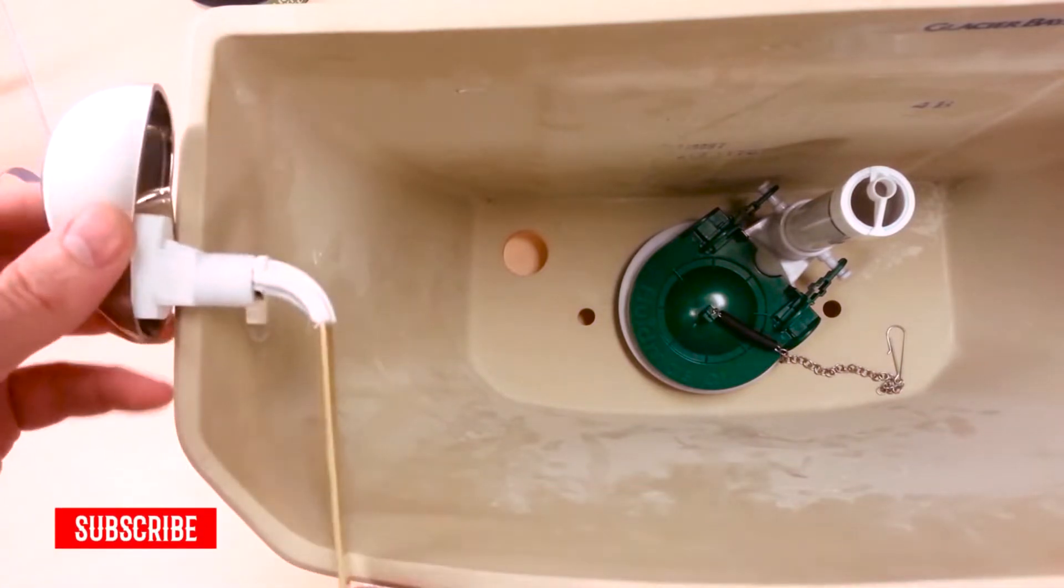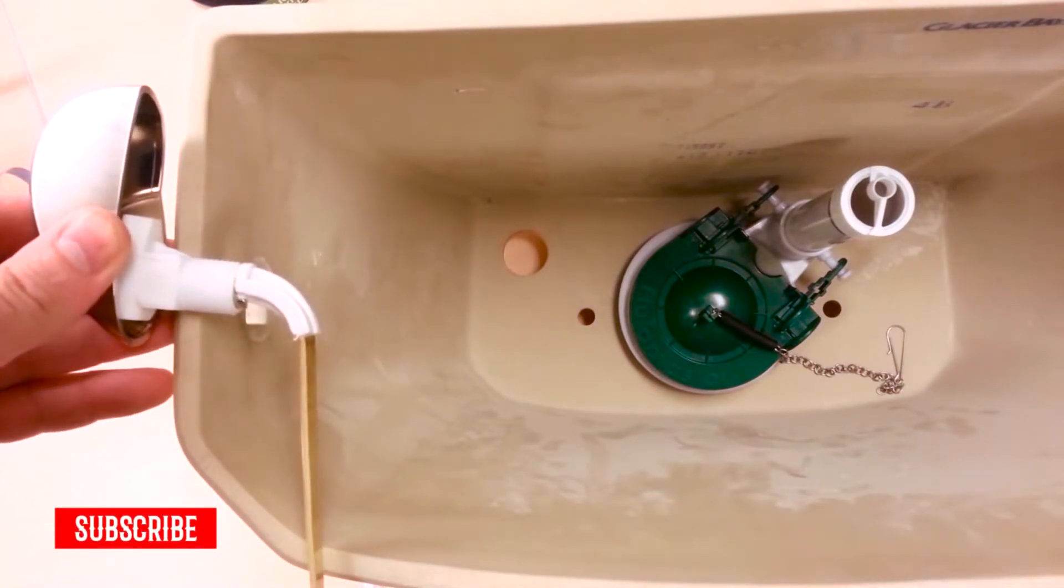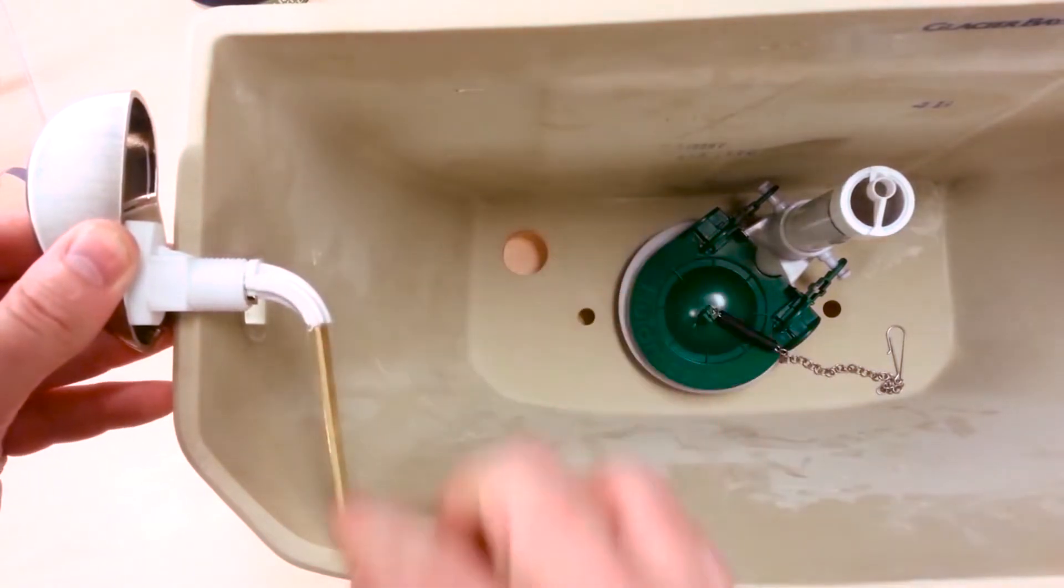Okay, so what you're gonna do is first gauge where you need to make your bend. Set it above the hole here where the bushing is, going as close to the front wall as possible.